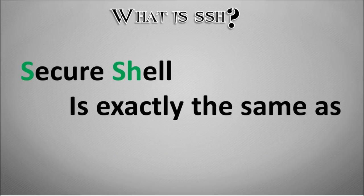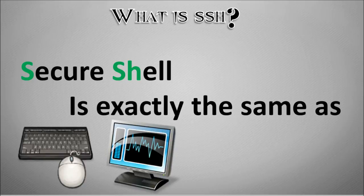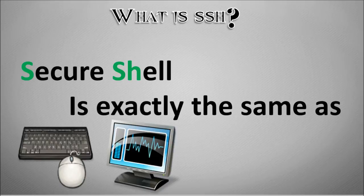SSH — secure shell — is exactly the same as using a keyboard and a monitor. If you plug your Raspberry Pi into your television or a PC monitor, connect up a keyboard, and start issuing commands, that is exactly the same as what you're doing via SSH. The only difference is you don't have to hijack the family's TV — you can just use your laptop and connect into it. It's just an alternative method of accessing your Raspberry Pi.